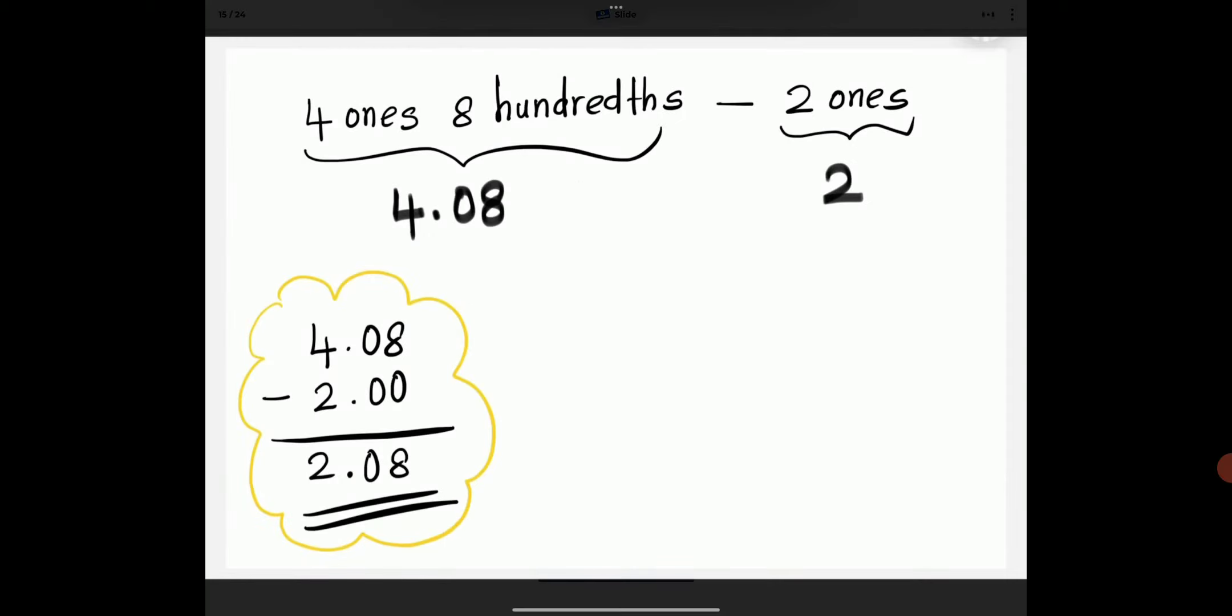4 ones and 8 hundredths is 4.08. 2 ones is 2. Align the like units and then subtract.